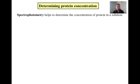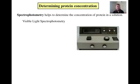There are two basic types of spectrophotometry. Visible light spectrophotometry is the first kind we will talk about. It is done using a spectrophotometer like the one pictured here. The basic principle behind it is that a solution with more protein will absorb more light than a solution with less protein.